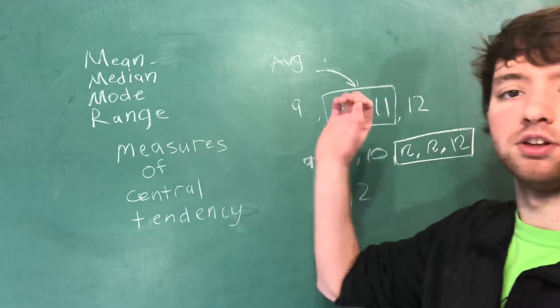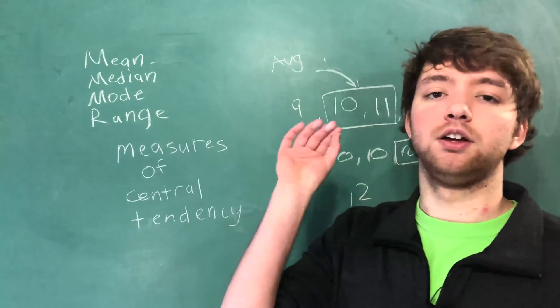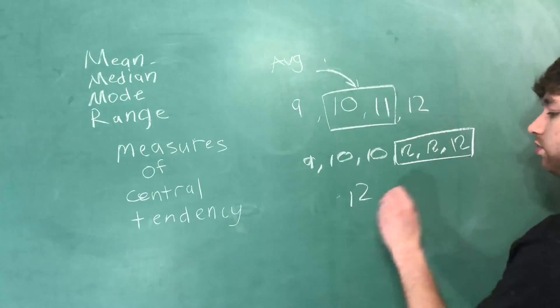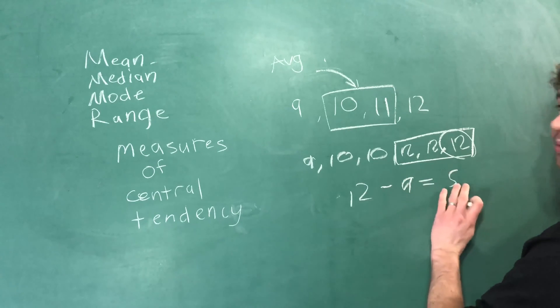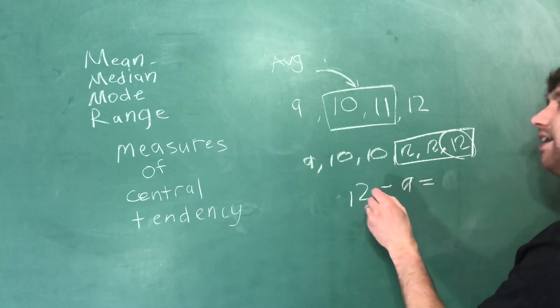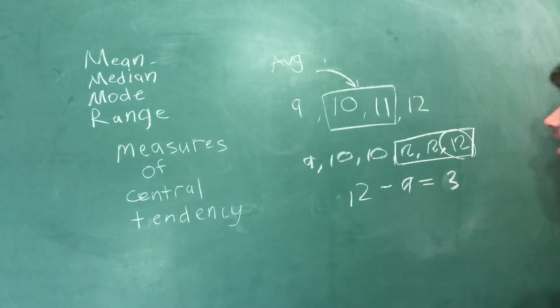Range - that's taking the largest value and subtracting the smallest value. So we take 12 and subtract 9, and get 3.